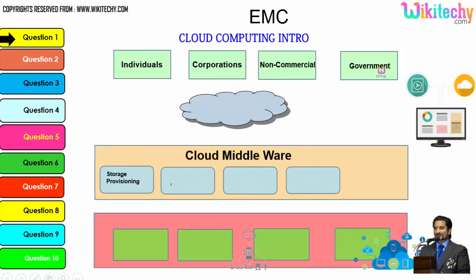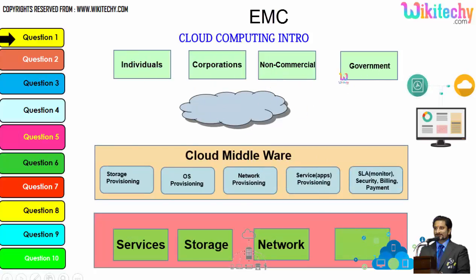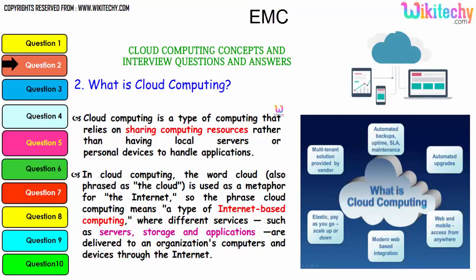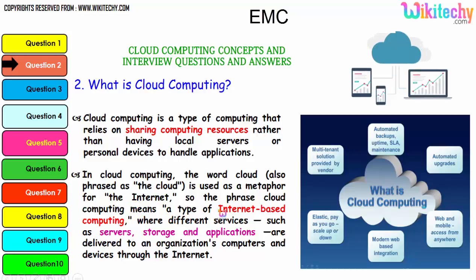There are different types of users: individuals, corporations, non-commercial people, and government. From any of these users, they are able to access services, storage, network, or operating system via cloud middleware - specialized software given by the cloud service provider to access resources. The cloud computing architecture works this way. The definition: cloud computing is a type of computing that relies on sharing computing resources rather than having local servers or personal devices to handle applications. The word 'cloud' is used as a metaphor for the internet, so cloud computing means internet-based computing.